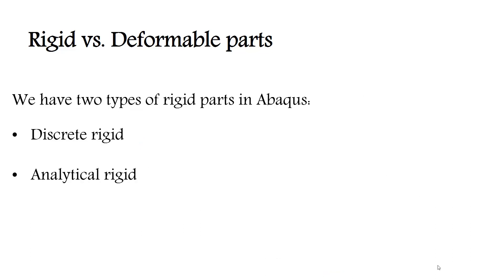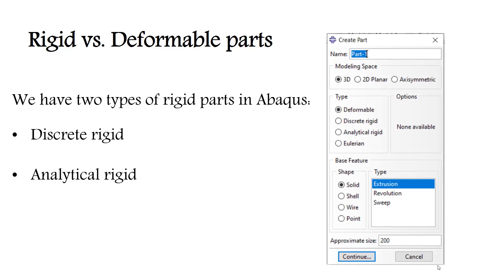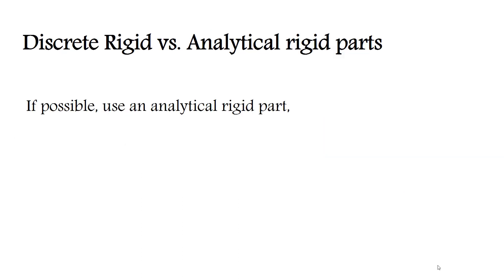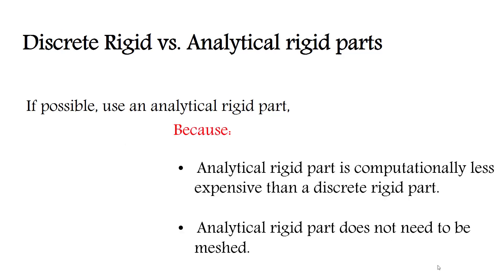We have two types of rigid parts in Abaqus: discrete rigid and analytical rigid. You can select the type of your part in the Part module. We prefer to use an analytical rigid part because it's computationally less expensive and doesn't need to be meshed.